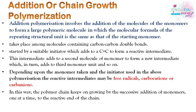The polymer chain keeps growing by successive addition of monomers, one at a time, and the reactive end of the chain remains active. We can terminate it with a suitable catalyst or terminating agent. Because carbon-carbon double bonds are used, we call this vinyl polymerization.